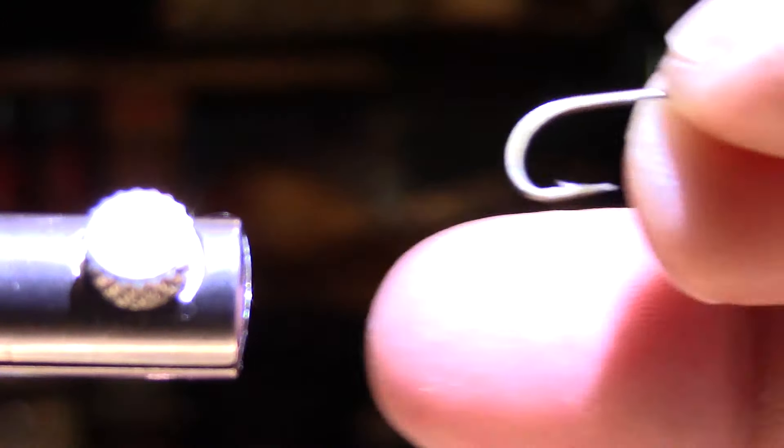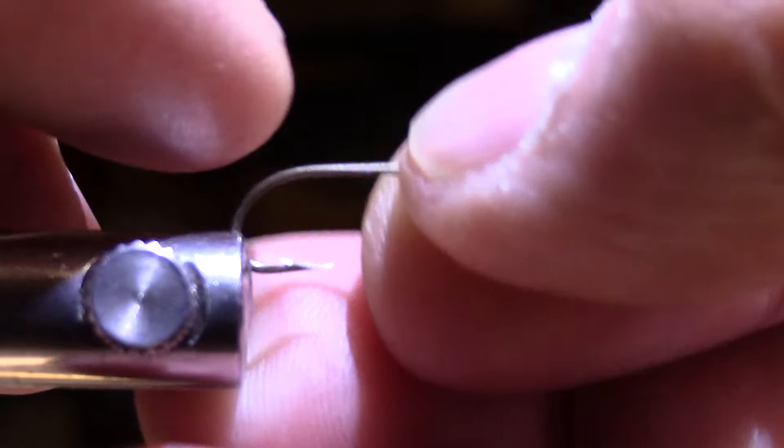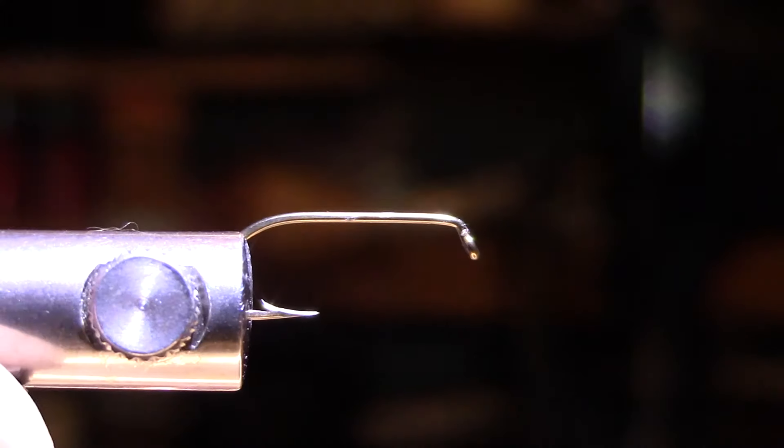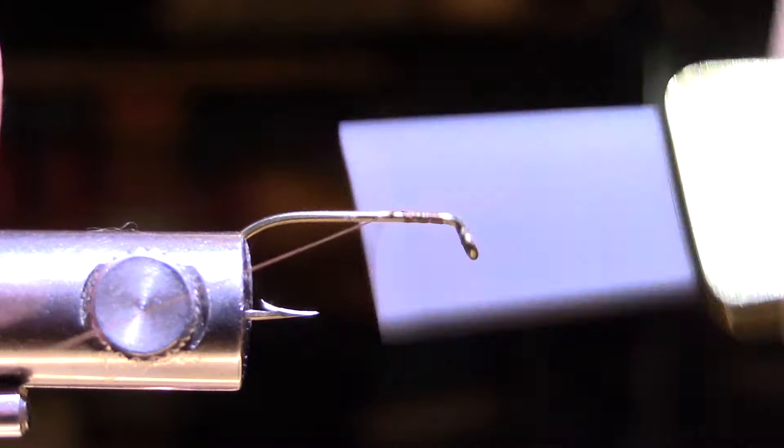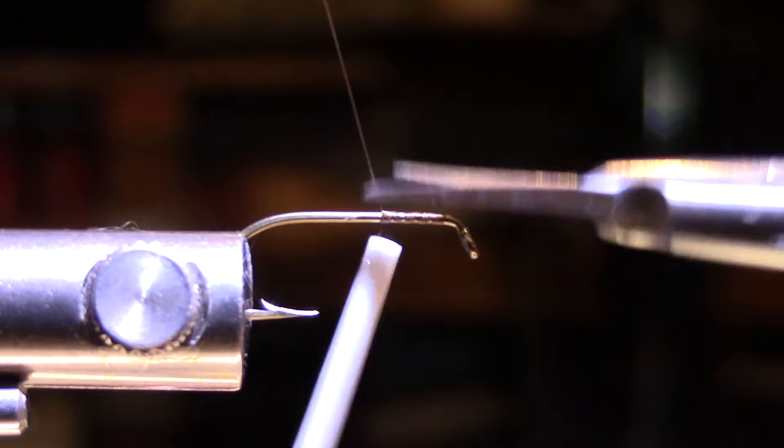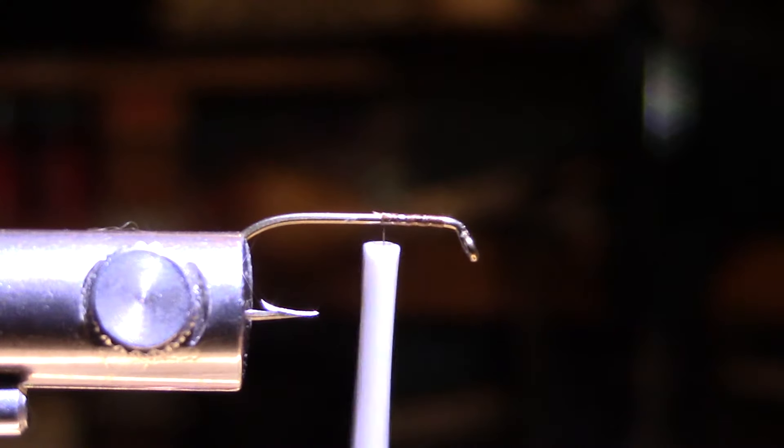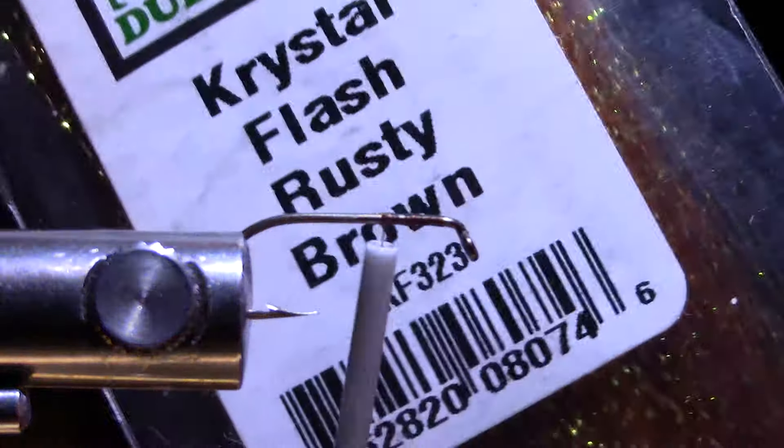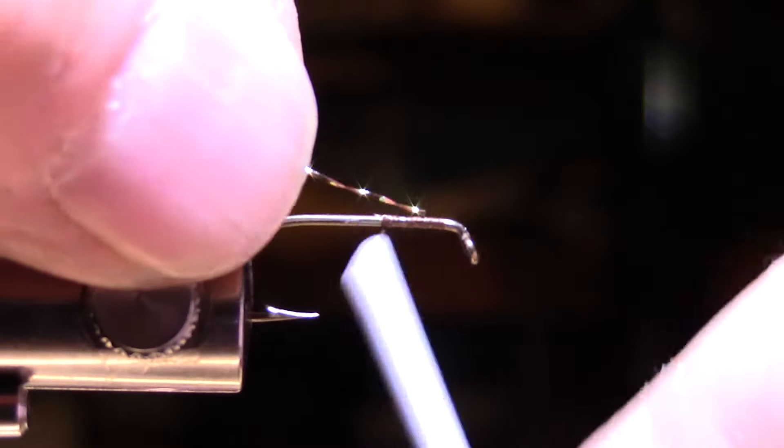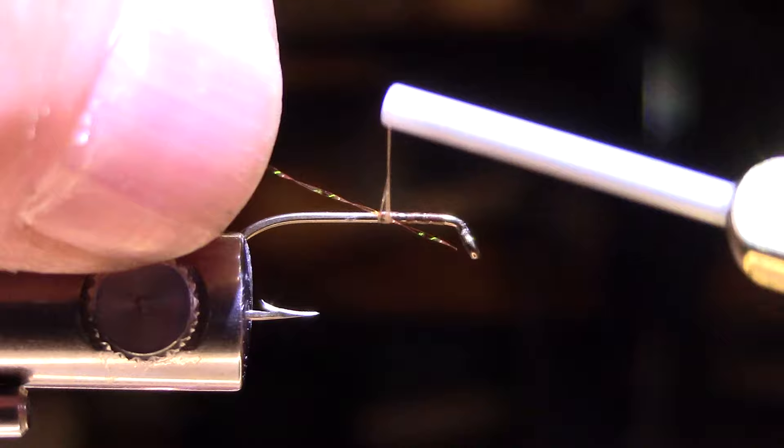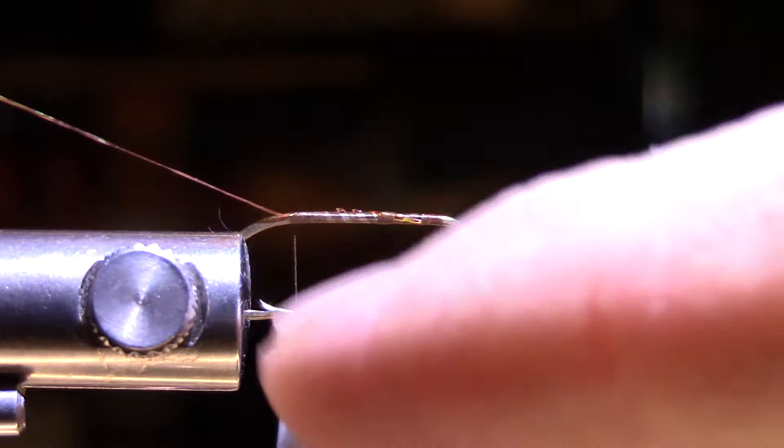I am going to place a size 10 dry fly hook in my vise, certainly bend the barb if you like. I would normally tie this in a 12 or smaller. Start my thread here, clip the excess, and then I'm going to put in a rib. This root beer or rusty brown crystal flash, I'll take a strand of that and I will just tie that in and bring that right back. I always stop at a point between the point and the barb of the hook.